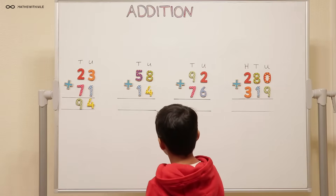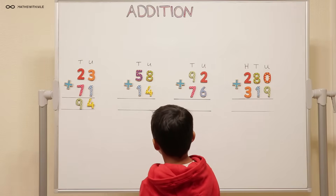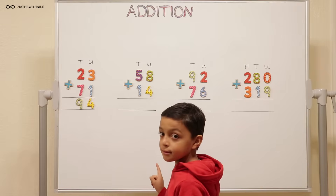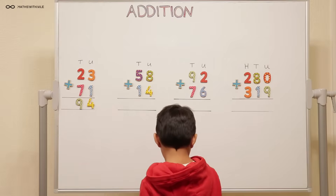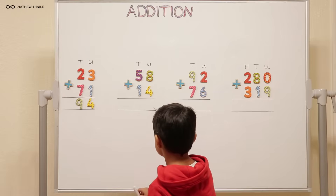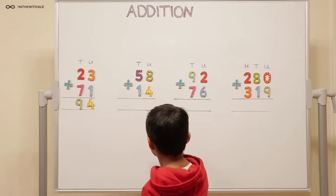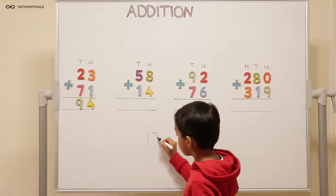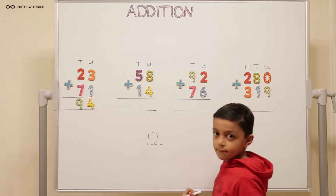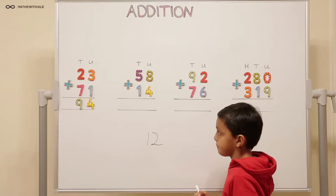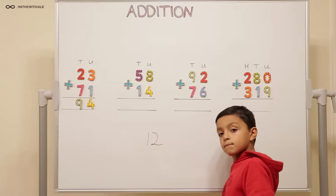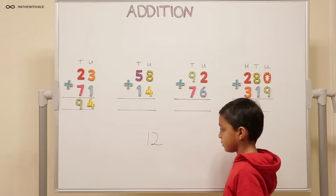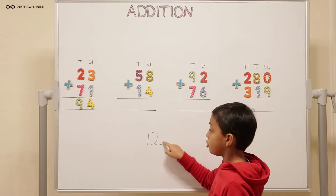Eight plus four. Eight plus four equals twelve. So let's discuss this number twelve. Can you write the number twelve on the board? Eight plus four is equal to twelve. But if I say to you we can only put one number under the eight and the four, what do I put? The two.